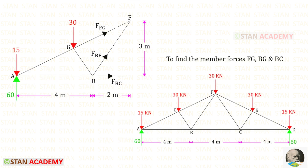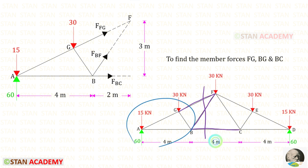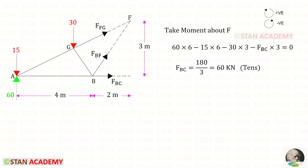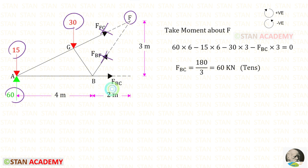To find the member forces in GF, FB, and BC, we make a section that cuts these three members. We can take either the left side or the right side; I will take the left side as it is easier. By taking the moment about F, we can easily find FBC. When taking moment about F, we do not consider FFG and FBF. The remaining forces are 60, 15, 30, and FBC.